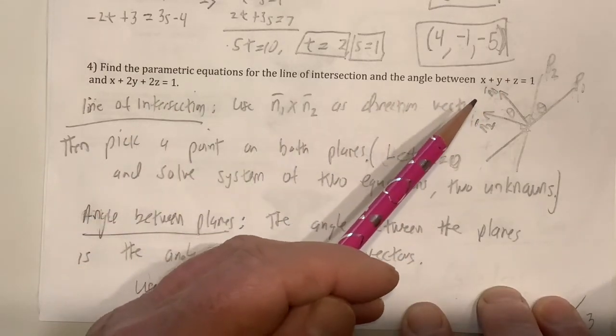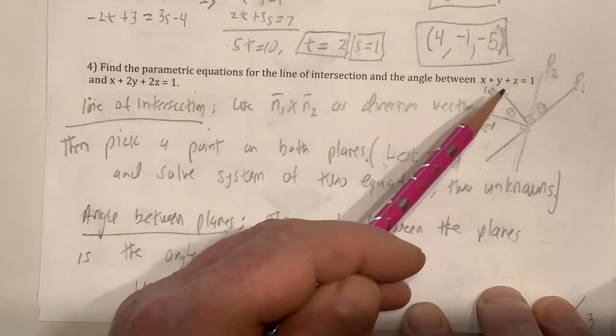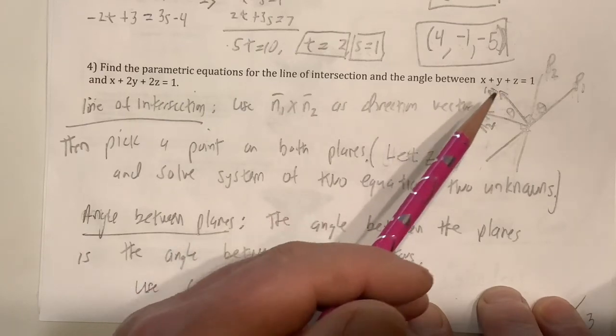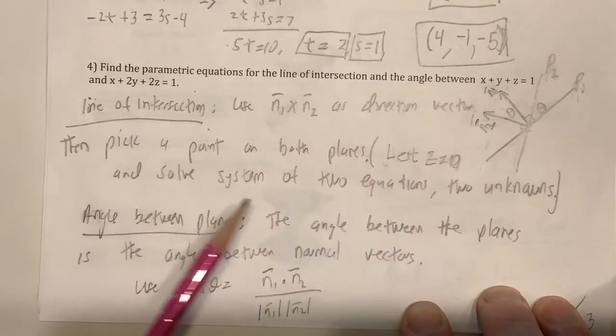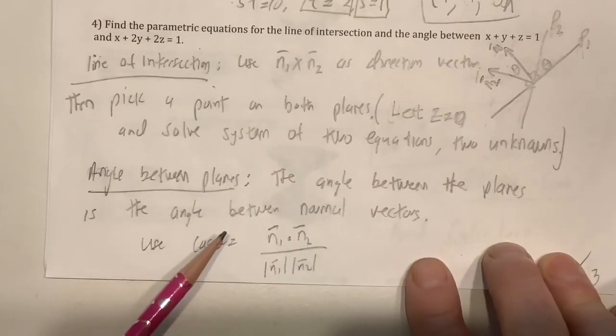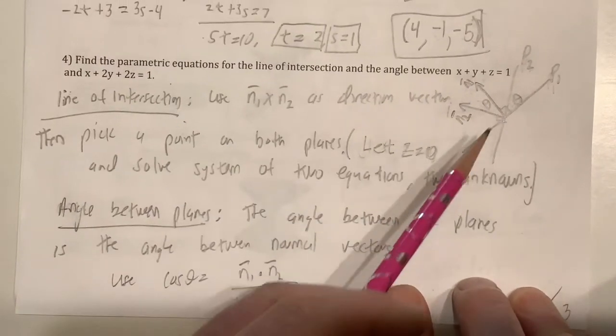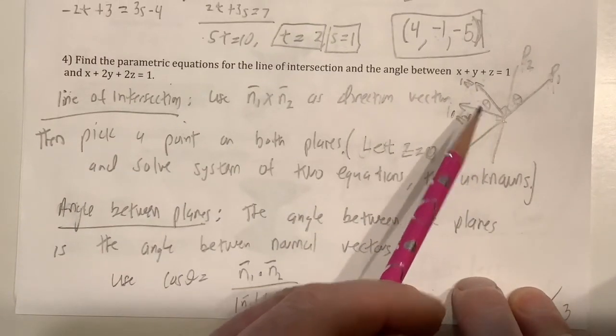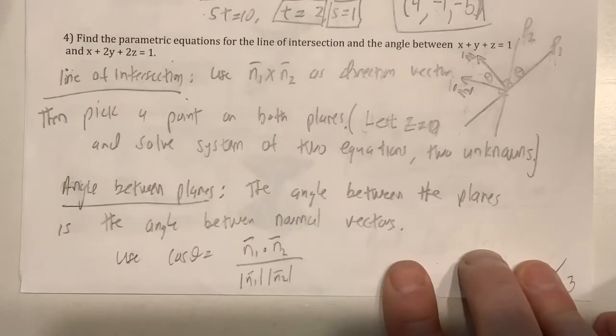all you have to do is maybe let z equals zero. You could do that. And then you could solve the system of two equations and two unknowns for x and y. Now, to find the angle that's between the planes, it turns out the angle between the planes is the same as the angle between the normal vectors. So you could use this formula for that.